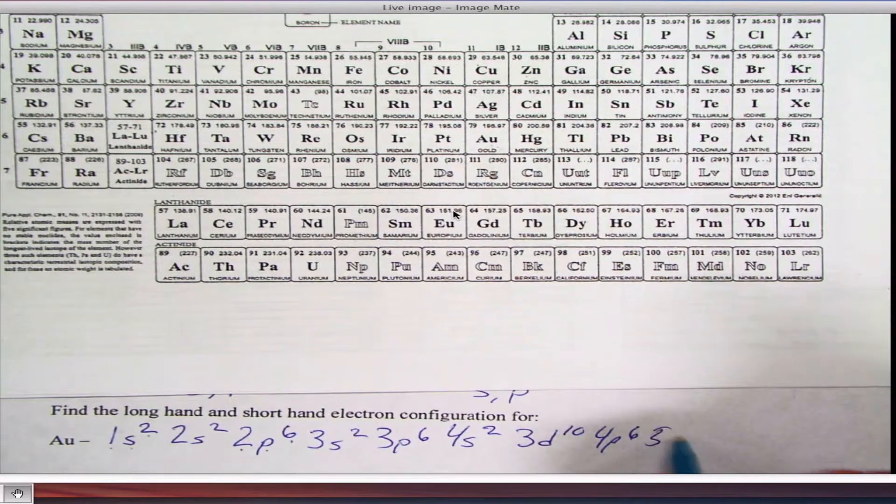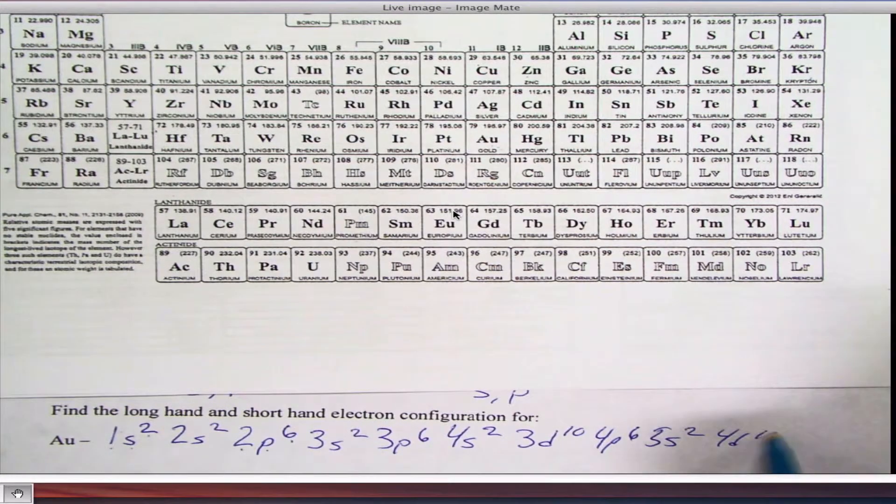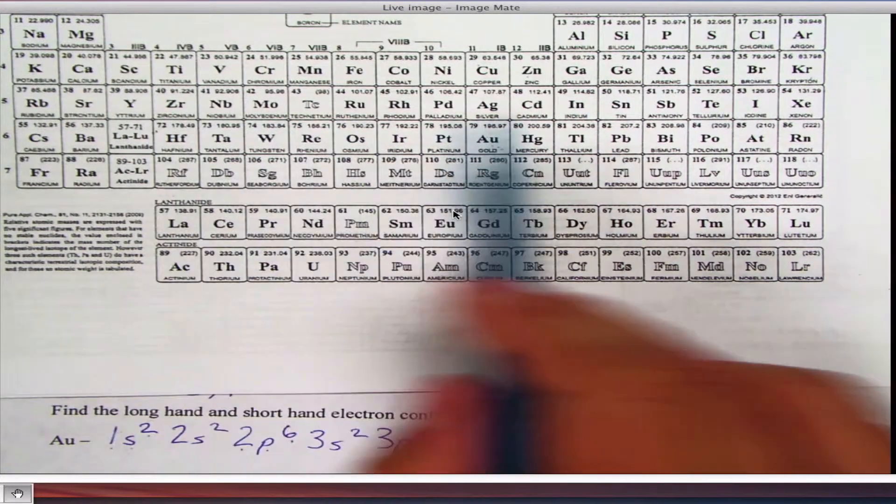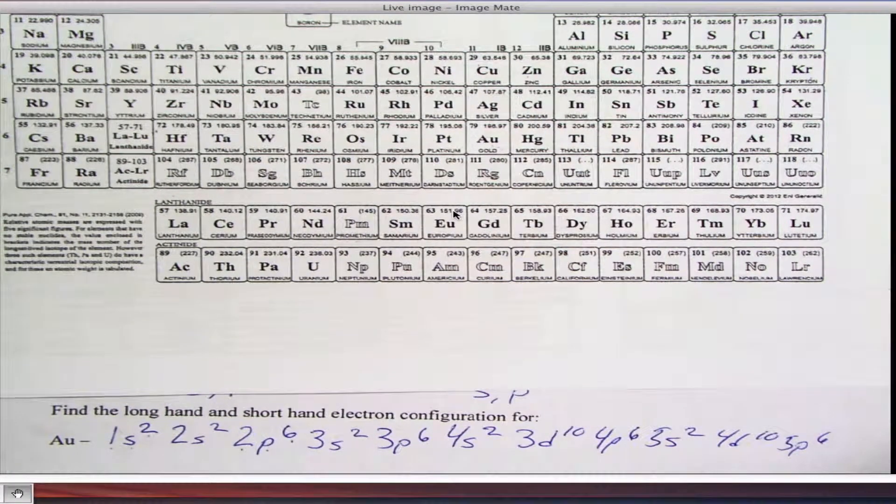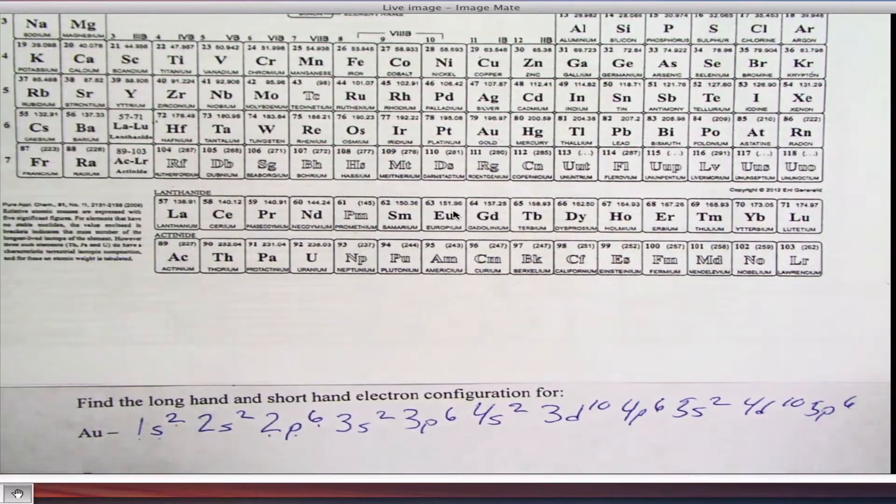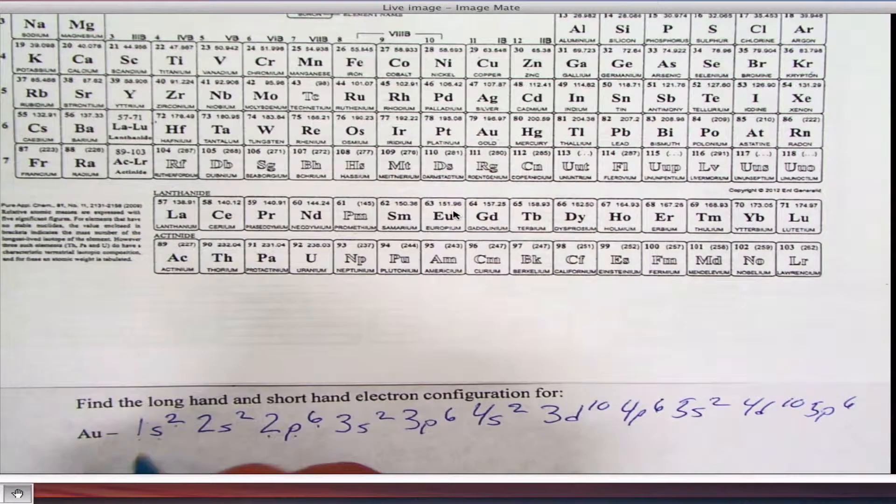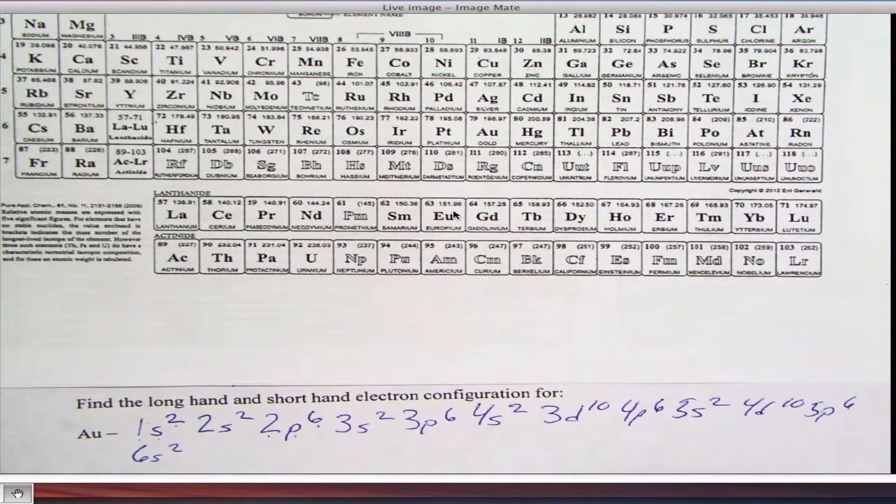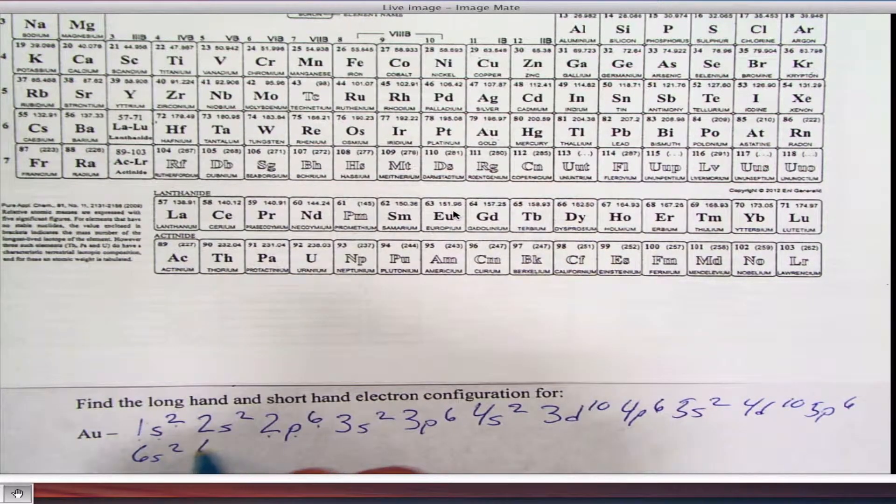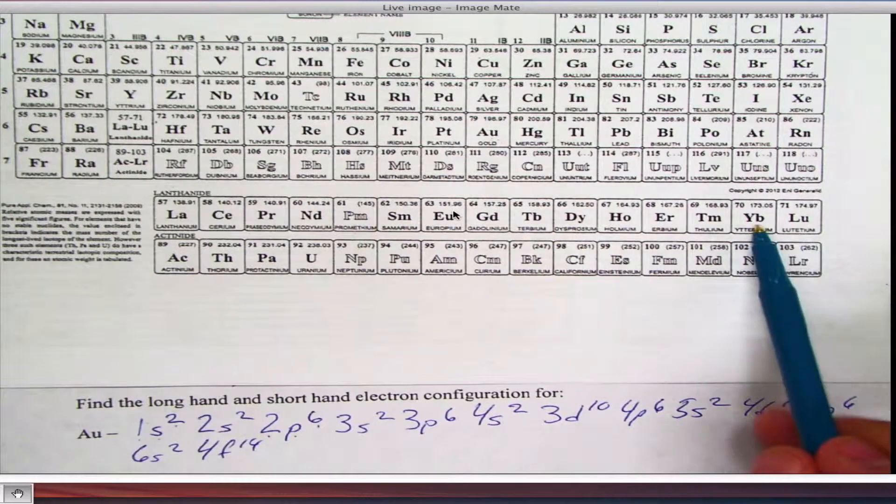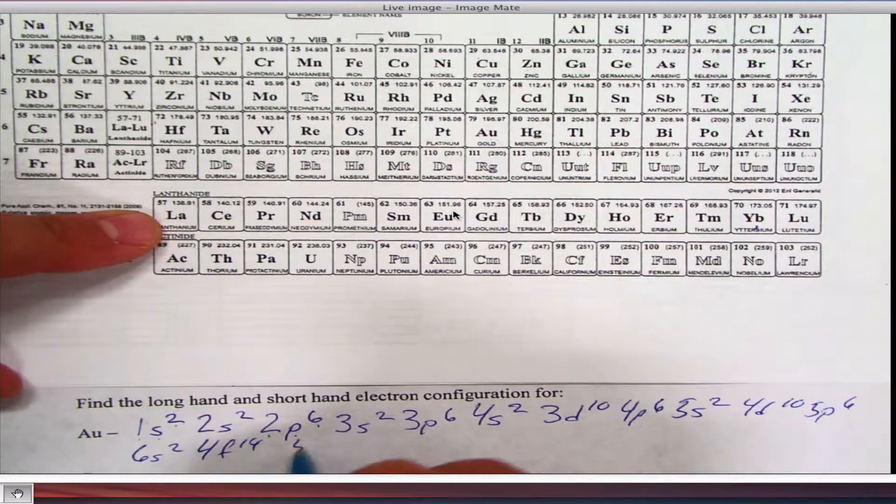This is going to be a long one. 5S2. Takes me to strontium. Then we go 4D10. Takes me all the way to cadmium. 5P6. Takes me to xenon. Then I'll start another row. 6S2. Takes me to barium. Then I go through my Fs. Remember? Drop back to 4F14. Takes me to ytterbium. From lanthanum to ytterbium. Lutetium is technically my first D.